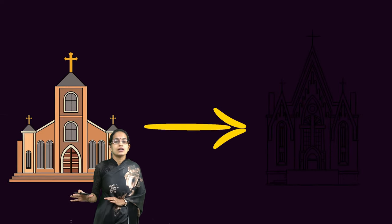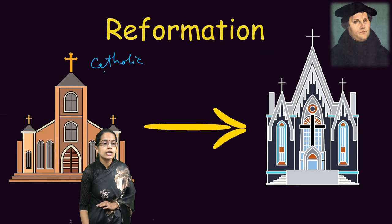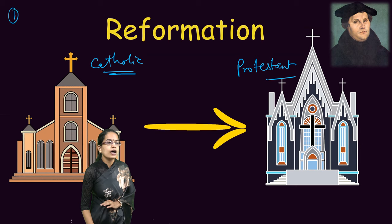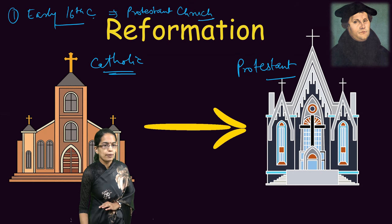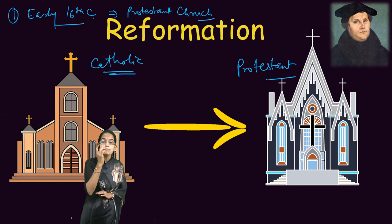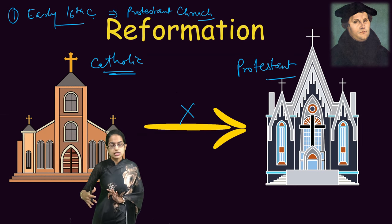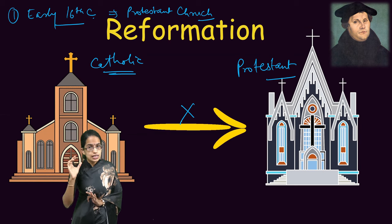The next important thing to understand is the period of Reformation. Reformation was nothing but a change in the system of the church — the Catholic churches transformed initially into the Protestant churches. There were two important phases under Reformation. The first part was during the early 16th century, which marked the period of Protestant churches. Christianity split into two divisions: Catholics, and those who did not abide by the rigid rules of Catholic churches started to move towards Protestant churches.